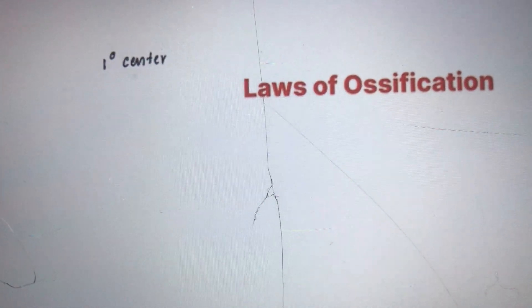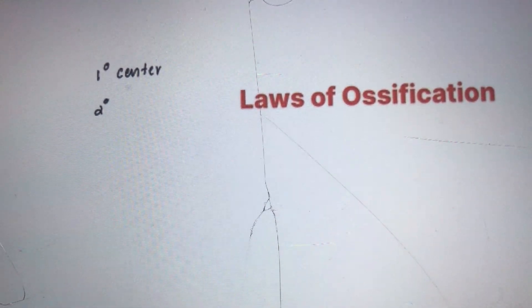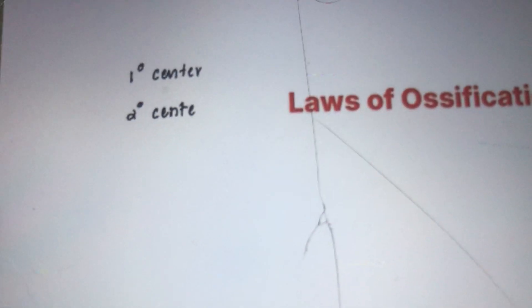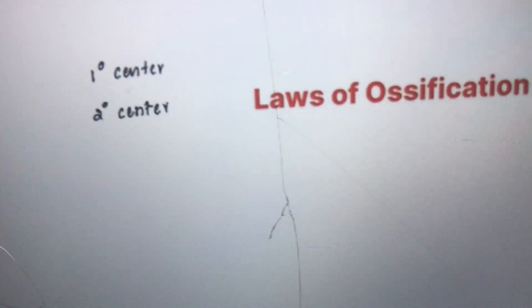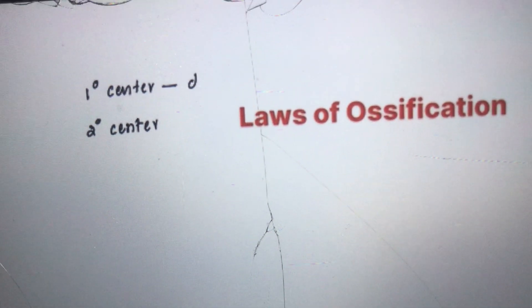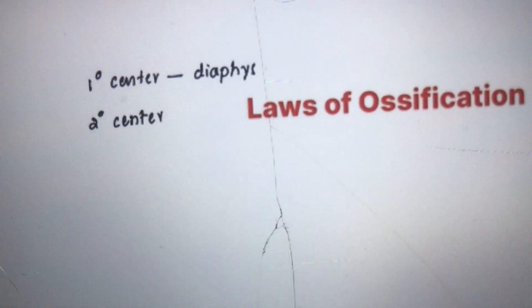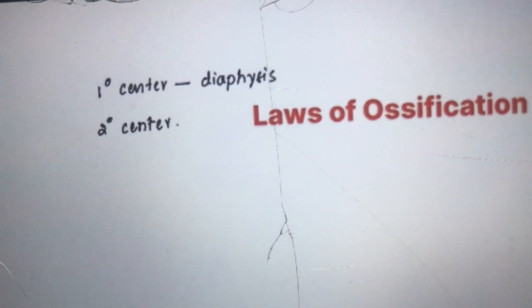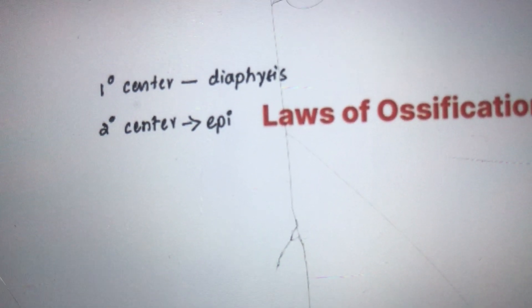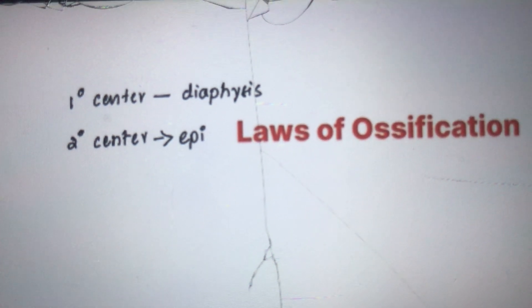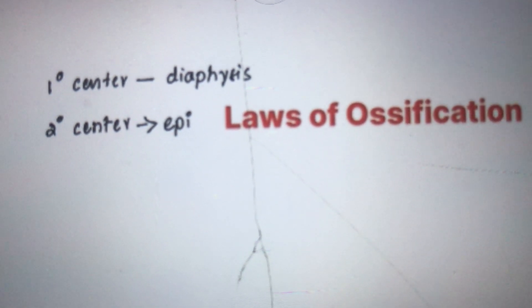We will learn about the laws of ossification. Before we begin, let's recall the meaning of primary and secondary centers of ossification. The primary center gives rise to the diaphysis, whereas the secondary center gives rise to the epiphysis.